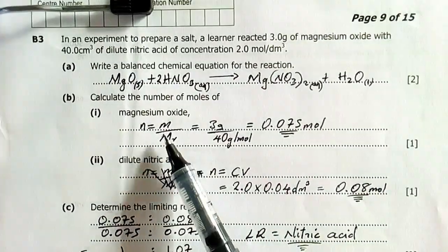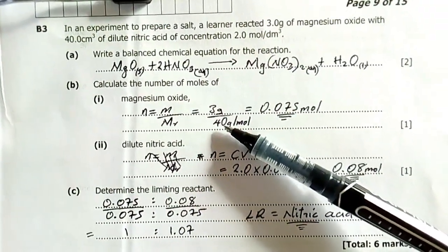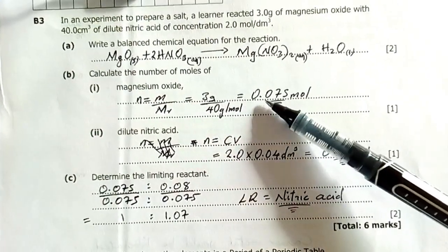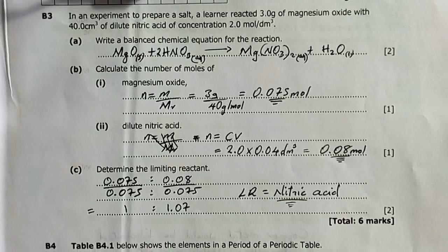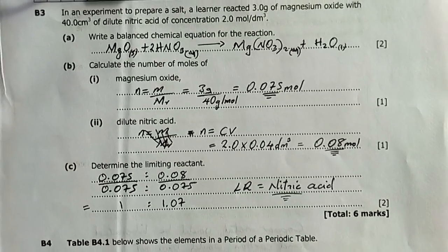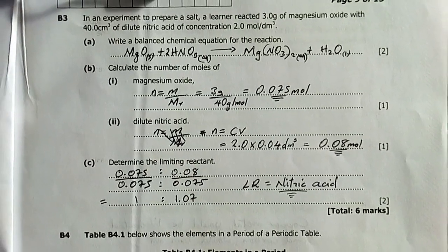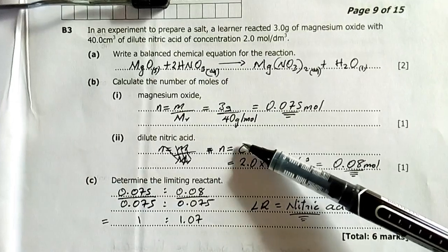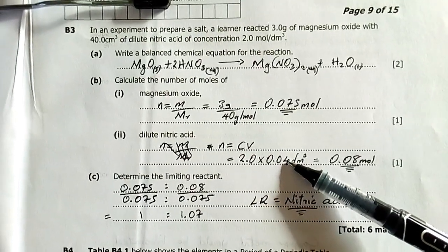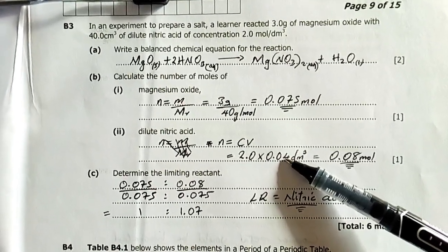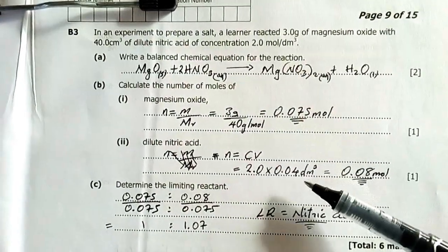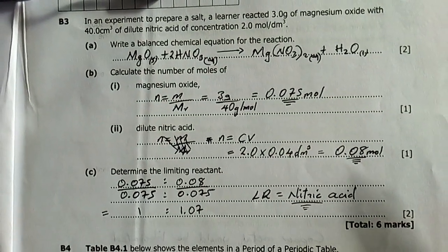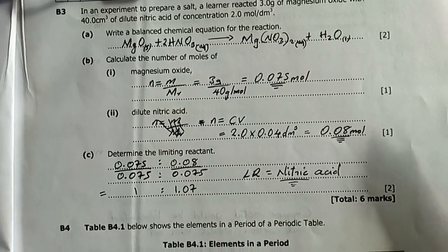Question B: Calculate the number of moles of magnesium oxide. Magnesium was three grams, atomic mass 24, giving 0.075 moles. For dilute nitric acid, we've been given the concentration and volume. Use the formula with volume and concentration to find moles. Convert 40 cubic centimeters to decimeters by dividing by 1000, then calculate: 0.08 moles.